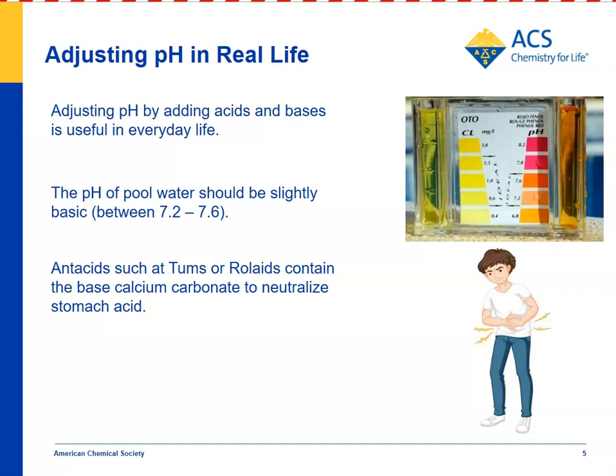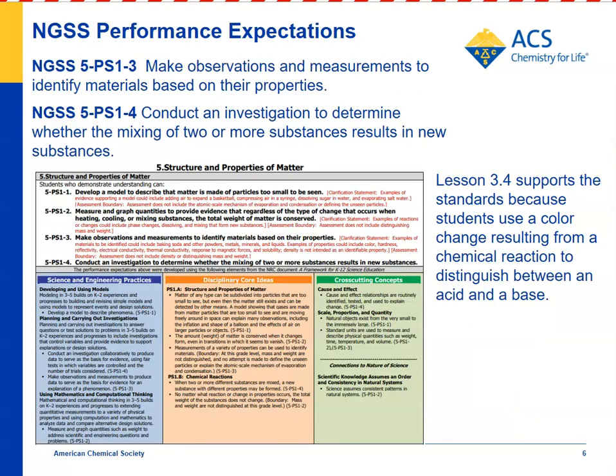For the NGSS standard 5PS1.3 — make observations and measurements to identify materials based on their properties — and 5PS1.4 — conduct an investigation to determine whether the mixing of two or more substances results in a new substance — Lesson 3.4 supports both standards. It shows that one of the properties of a substance is the color that it turns a pH indicator, and that adding an acid or a base to a pH indicator creates a new substance, as evidenced by the color change.